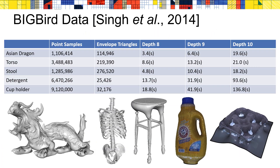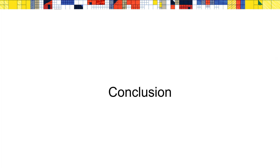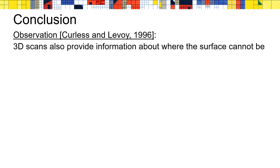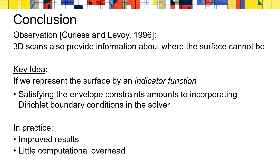We can also compare the runtime of the reconstruction process with and without envelope constraints. The table provides statistics about the input, including the number of points and the number of triangles on the envelope, as well as running times for reconstructing using octrees at different depths without envelope constraints. Incorporating the envelope constraints shows only a small increase in total running time. To conclude, our work borrows from Curliss and Lavoie, using the fact that scanner data provides information not only about where the surface is, but also where it cannot be. We observe that formulating surface reconstruction as fitting an indicator function makes incorporating envelope information a matter of supporting Dirichlet boundary constraints, producing significantly improved reconstructions with only a marginal increase in running time.